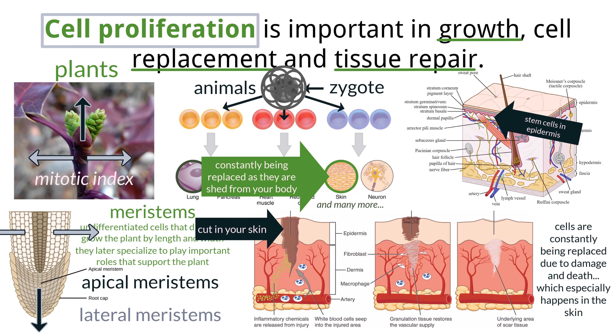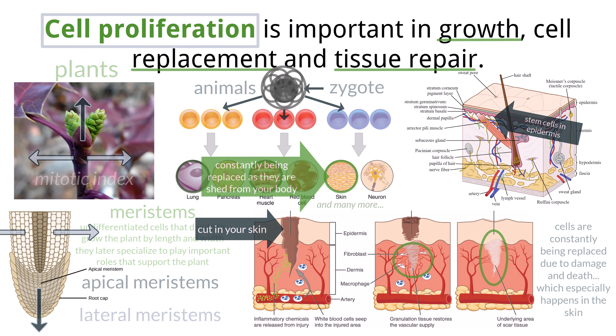White blood cells, called macrophages and fibroblasts, will travel to the site of the wound. The white blood cells will fight infection, and the fibroblasts produce proteins to help with closing the wound. Fibroblasts undergo proliferation so that the wound is covered quickly. They also help to break down the fibrin clot and make collagen and help support other cells involved in healing wounds.